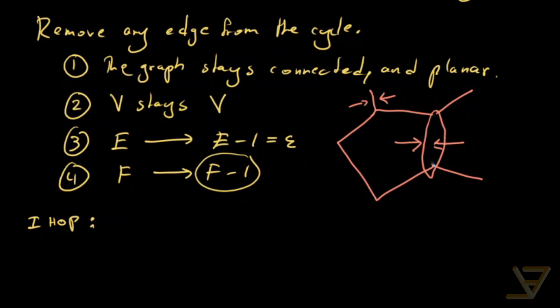We find that we can use the induction hypothesis to say that V minus E minus one plus F minus one is equal to two, and this in turn implies that V minus E plus F is equal to two. And that completes the induction.